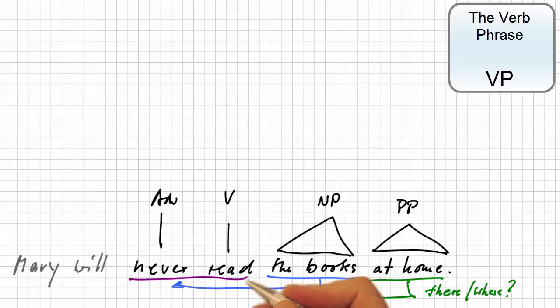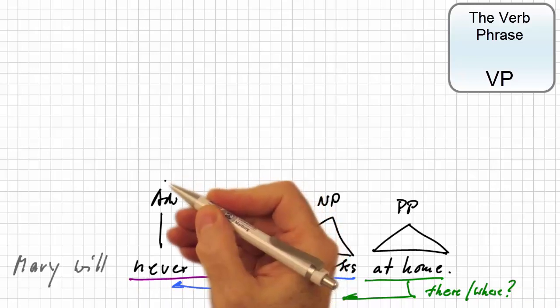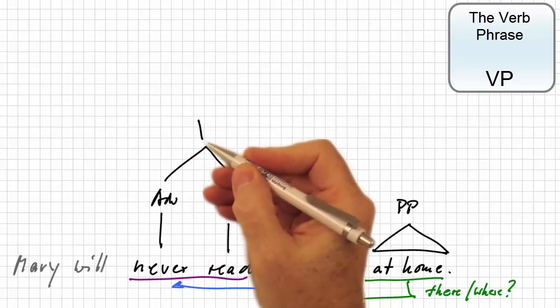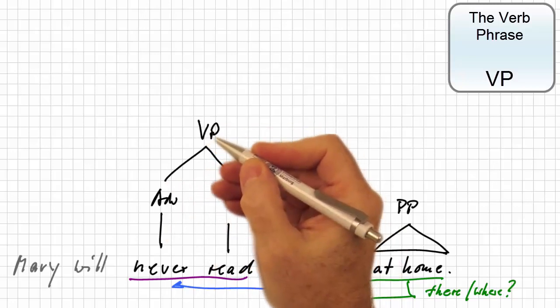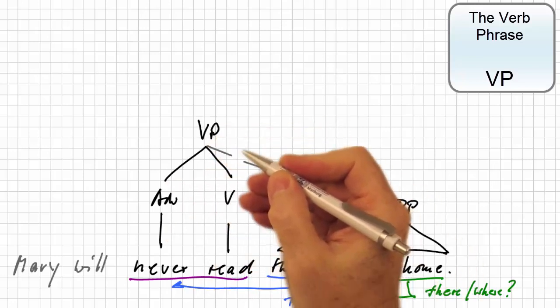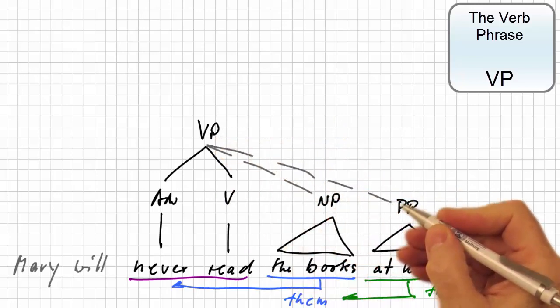The central components of the verb phrase, though, are the optional specifier never and the verbal head. They build the verb phrase. But where shall we adjoin the noun phrase and the prepositional phrase?